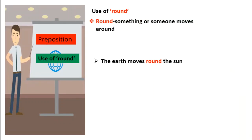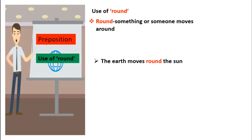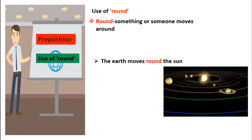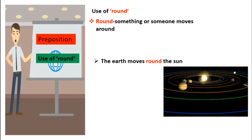Use of 'around'. When something or someone moves around, we use the preposition 'around'. Like, the earth moves around the sun. Here in the picture, we can see that the earth is moving around the sun.